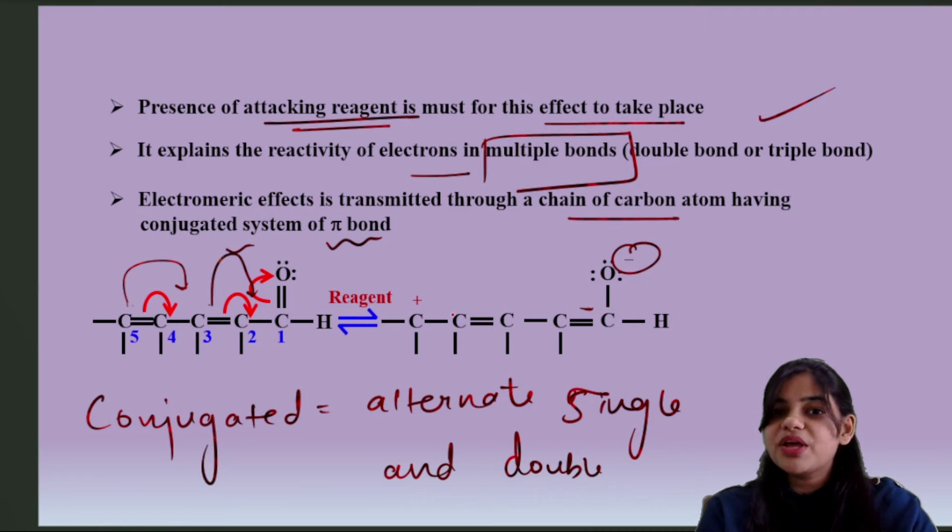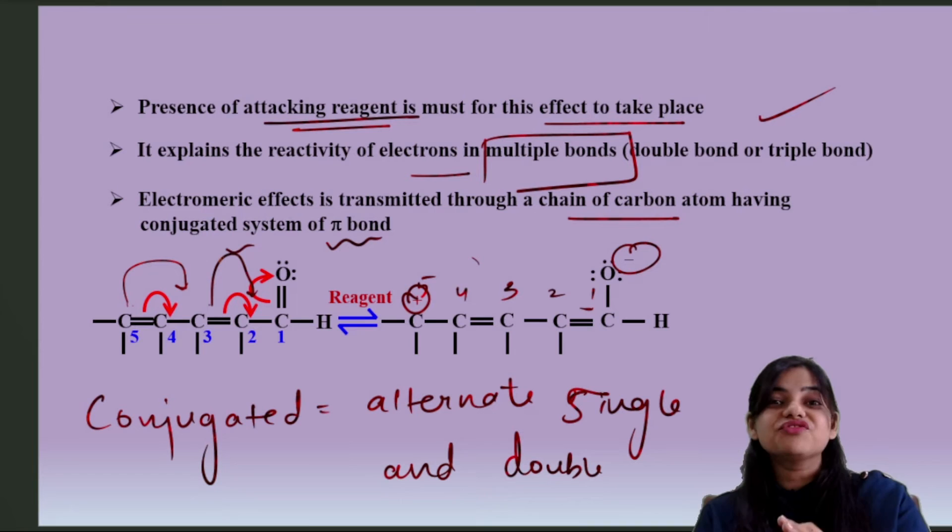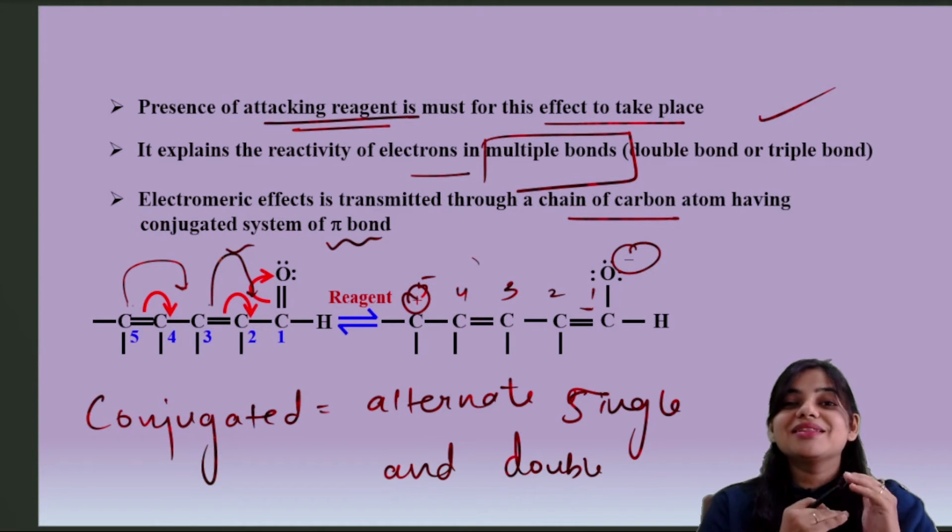This carbon has gained double bond. And if you see the number, if I put it one, two, three, four, five, the double bond has changed and the last carbon, which has no option, gets a positive charge. So one atom will get negative charge by pulling the electron, another atom will get a positive charge.